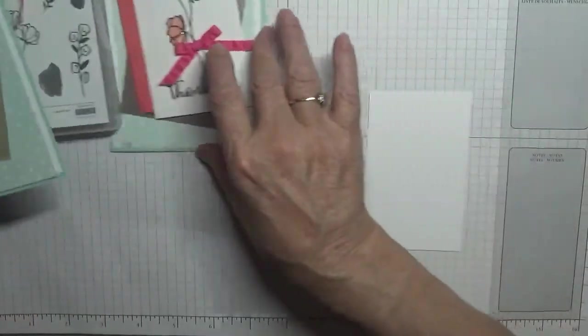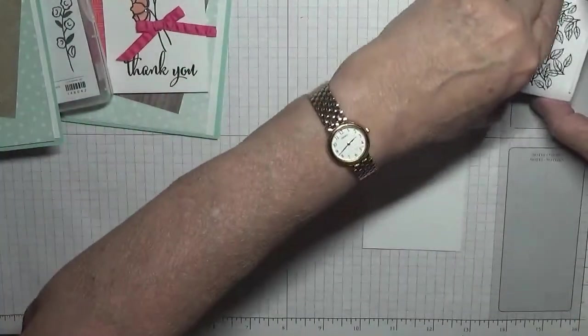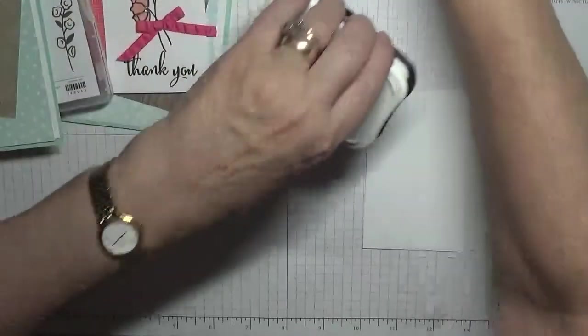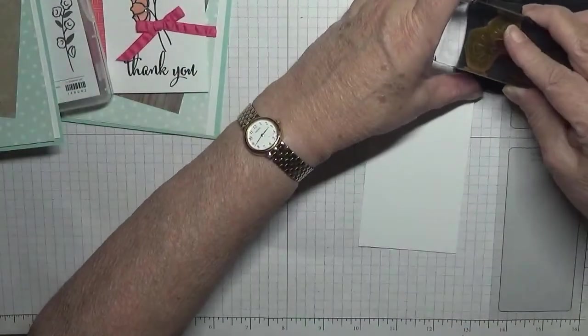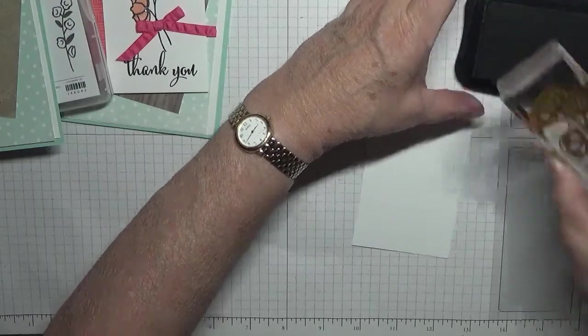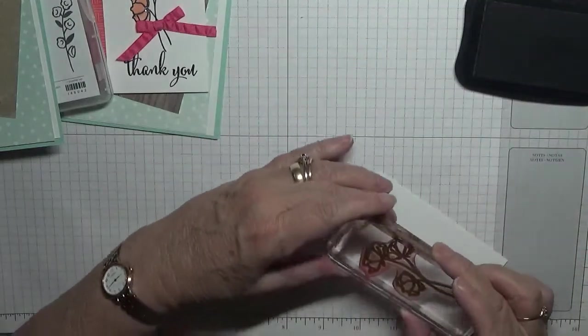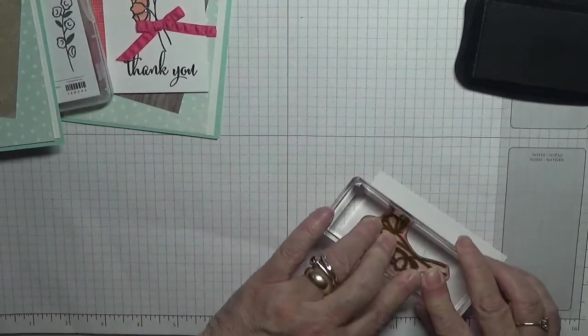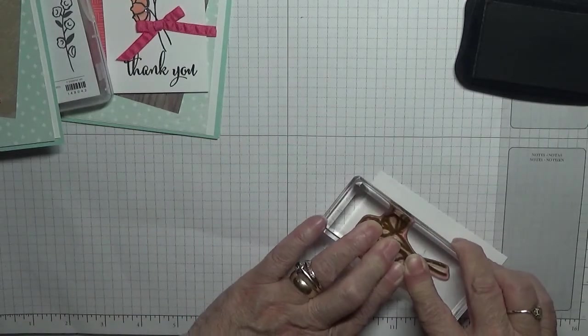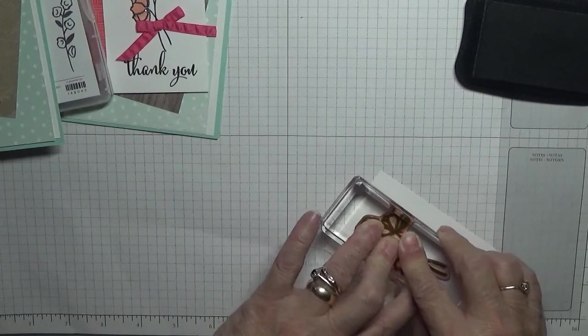So let's stamp our flower first, and that can be drying. I'm going to do it in Memento. And just stamp that there, in the middle but up the top.